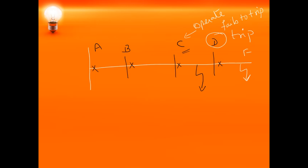In case the circuit breaker at C fails to operate, then the circuit breaker at B has to operate, which acts as a backup. The relay which is used has to identify in which location the fault is, and accordingly that particular circuit breaker has to operate. So the relay should have proper selectivity. To have proper selectivity, there are three protective schemes which can be used depending upon the system condition.